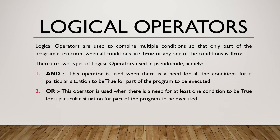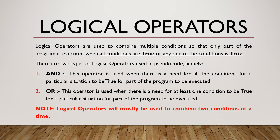The second type is the OR logical operator. This is used when at least one condition needs to be true for part of the program to execute. For AND, both conditions must be true. For OR, only one condition has to be true — if the other is false, that is not a problem. Logical operators will mostly be used to combine two conditions at a time, as you will see in exam questions.